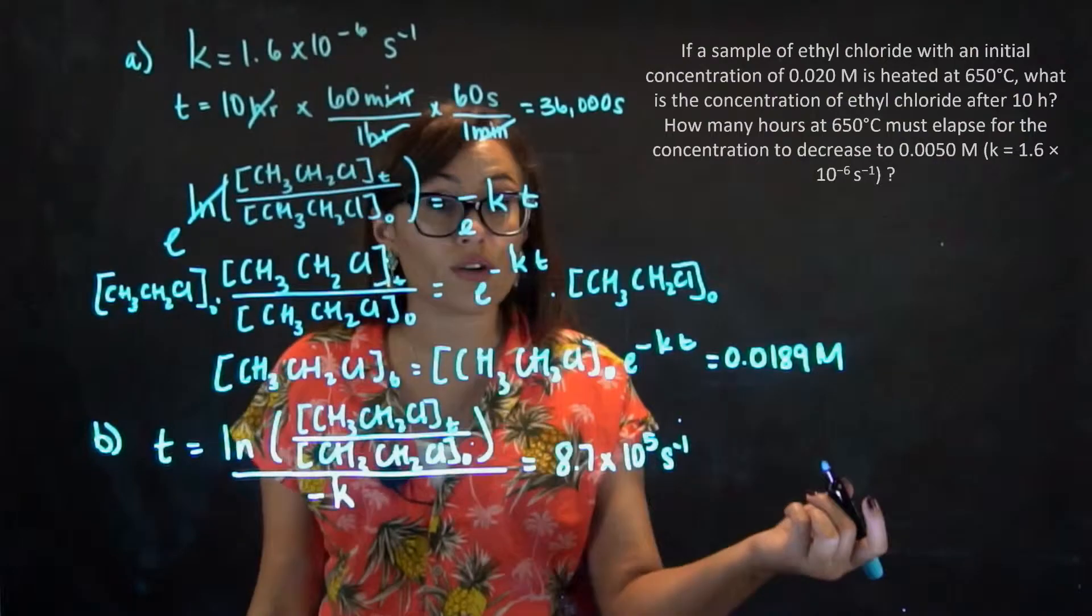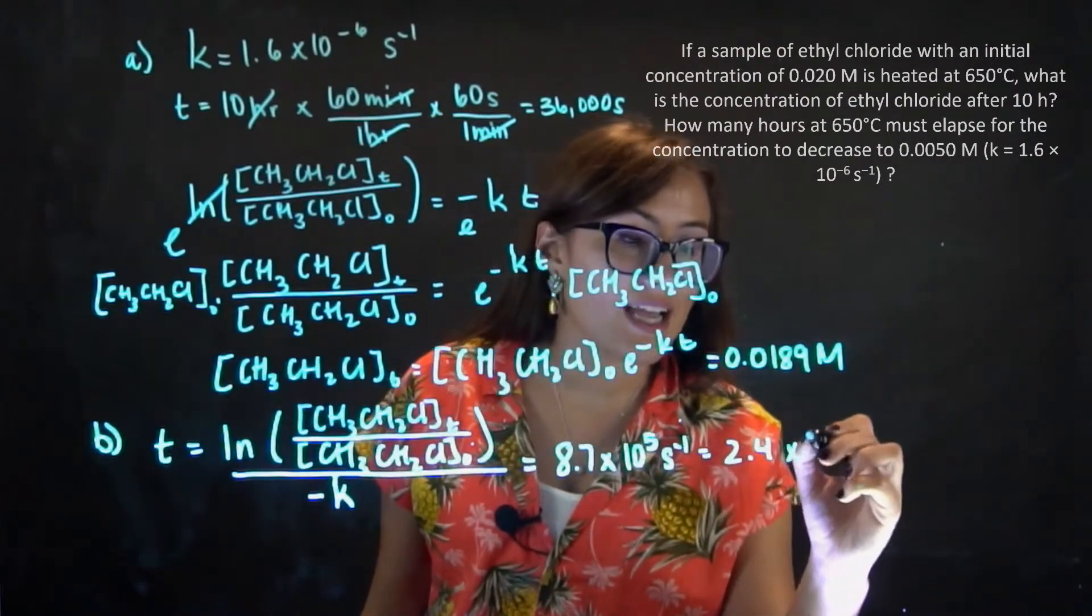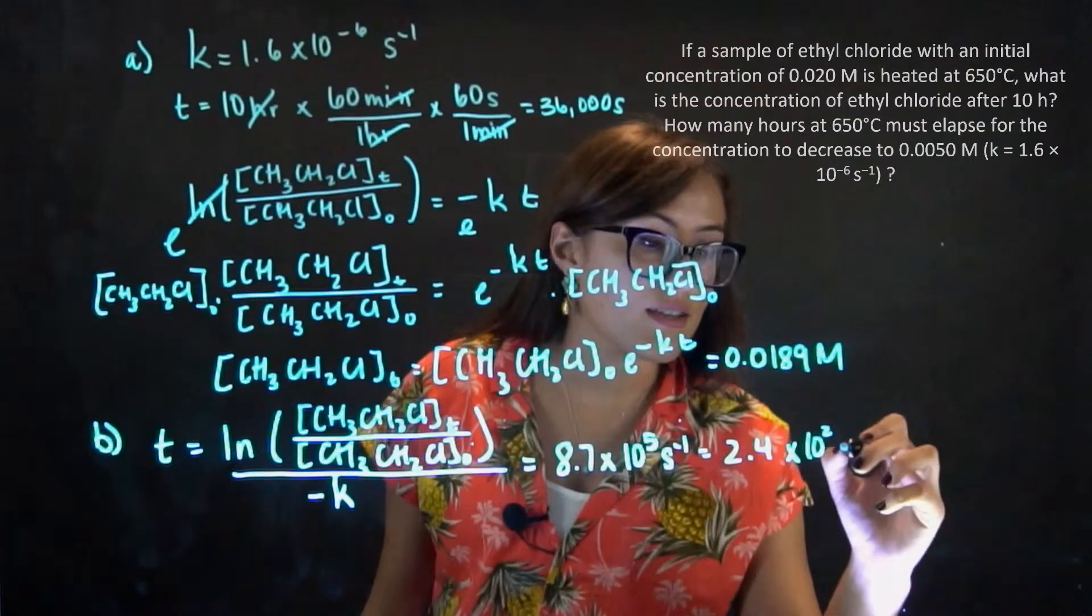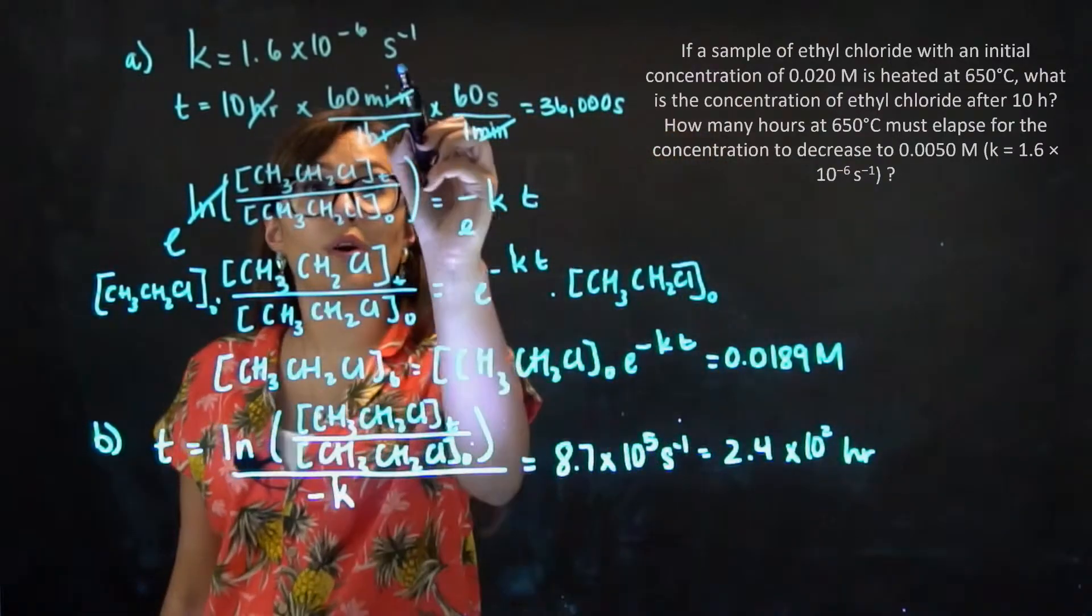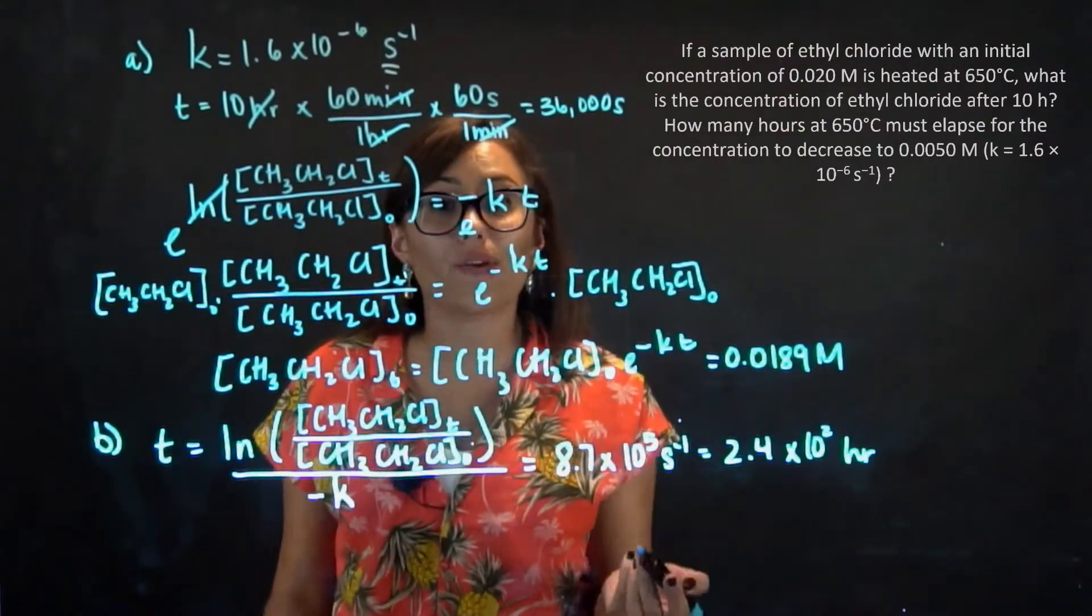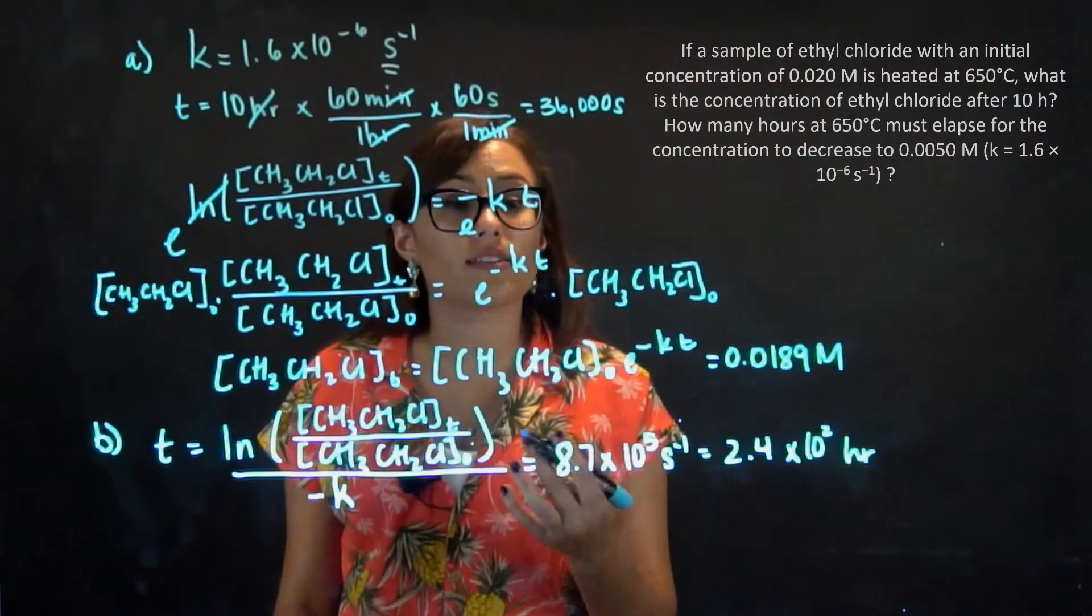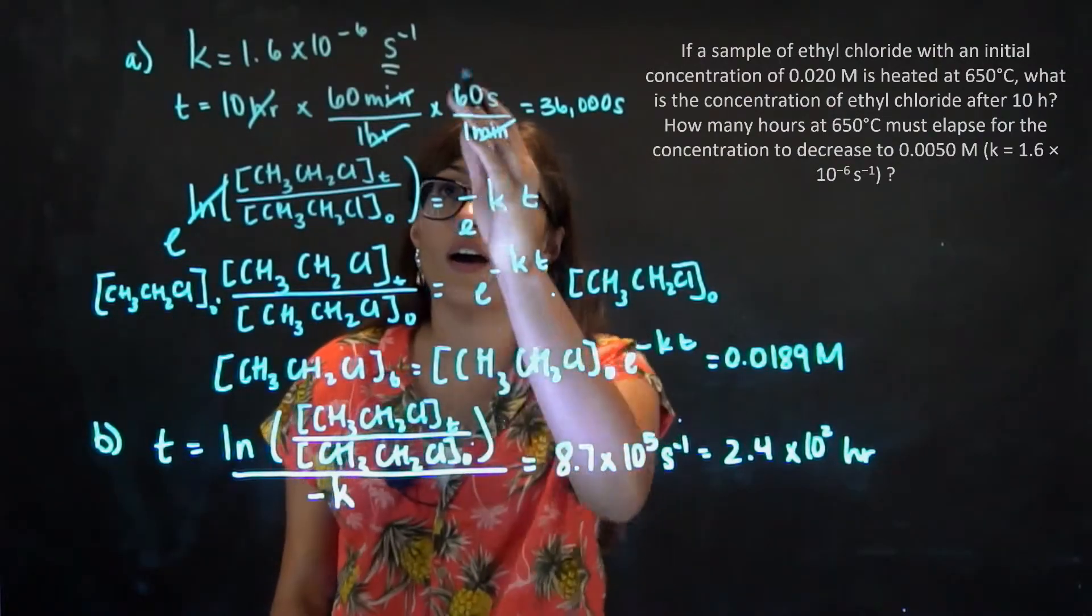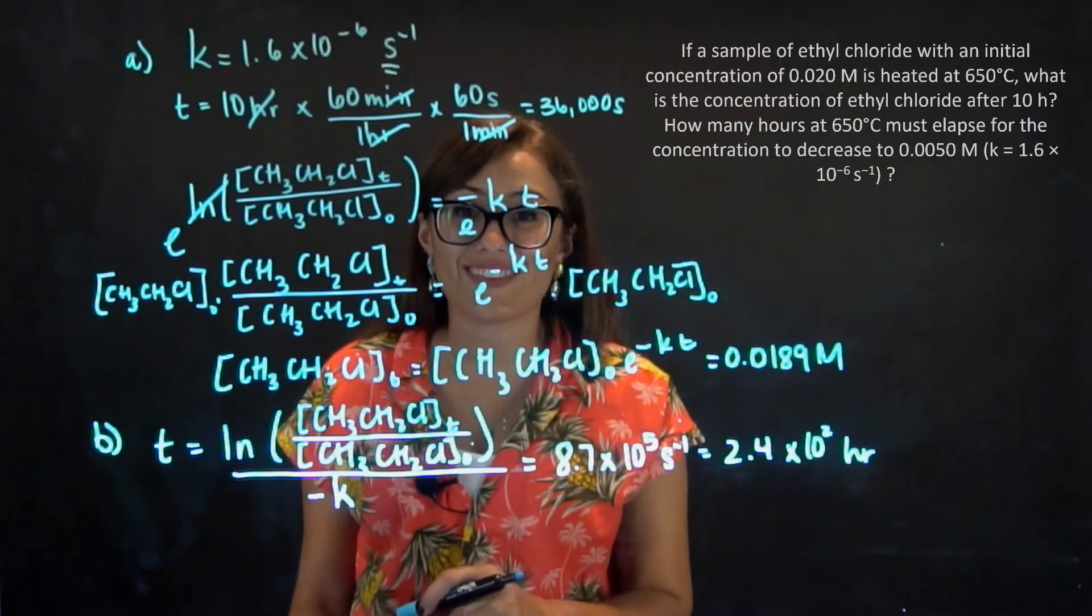Which, if we want to convert this to hours, ends up equating to be 2.4 times 10 to the second hours. So it is important to, yet again, always make sure you're looking at your units, because your units are going to tell you and give you a little bit more information about what kind of rate order your reaction is following, the order of your reaction.